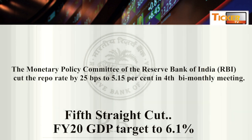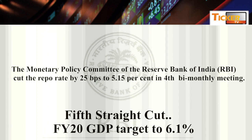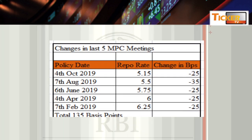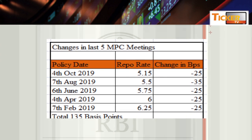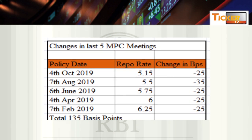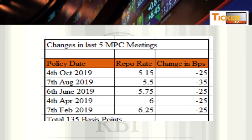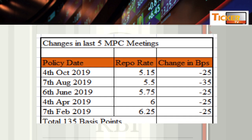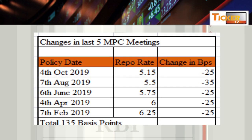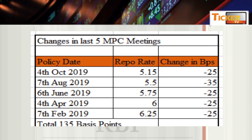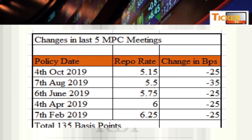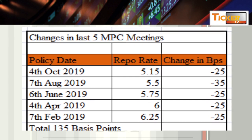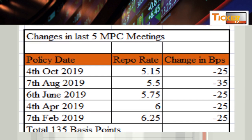Is policy mein unhone 25 basis points repo rate cut kiya hai. If we look at last five MPC meetings, joh RBI ka trend chal raha hai, which is going downwards towards repo rate. From last five meetings, they have reduced 135 basis points, which is 1.35%. And it is almost the lowest in one decade.